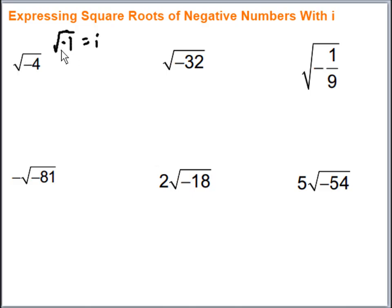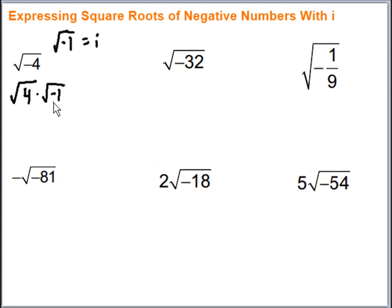For the first example, we're going to break it up into two pieces: the square root of 4 times the square root of negative 1. The square root of negative 1 is just i, and the square root of 4 is 2. So in this case we end up with 2i.